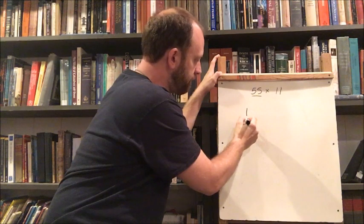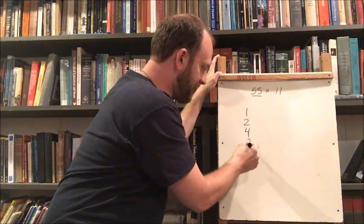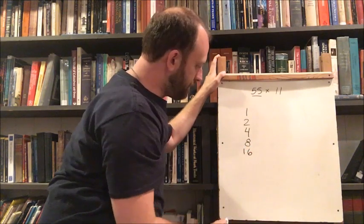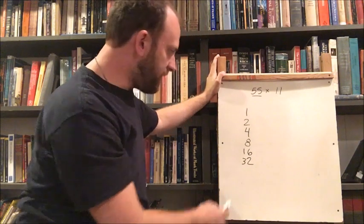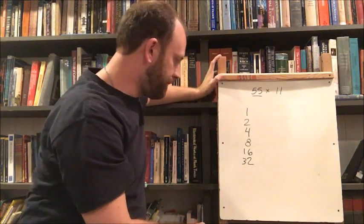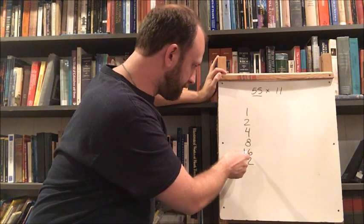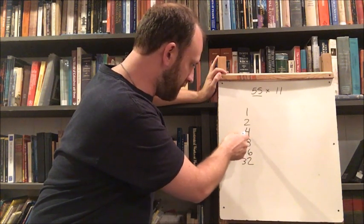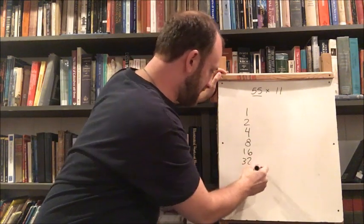We're going to do 1, 2, 4. 4 doubled is 8. 8 doubled is 16. 16 doubled is 32. Okay at this point do I have enough to get to 55? Let's see. 32 and 16 is 48 plus 4 is 52 plus 2 is 54 plus 1 is 55. So yes I do.